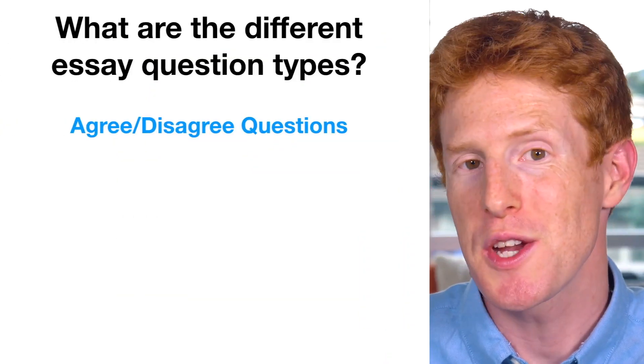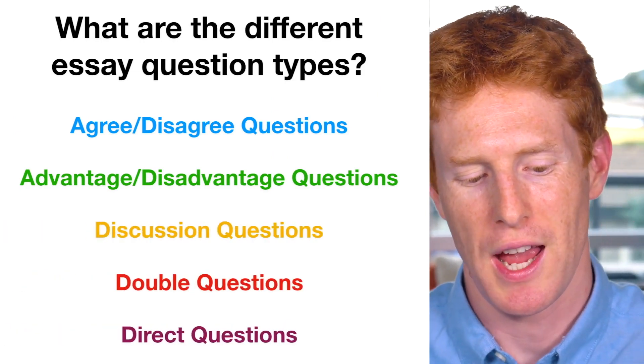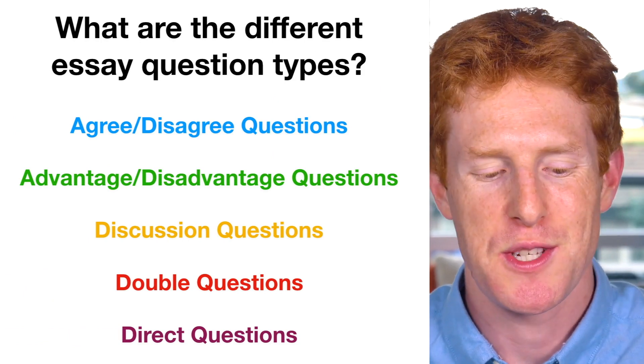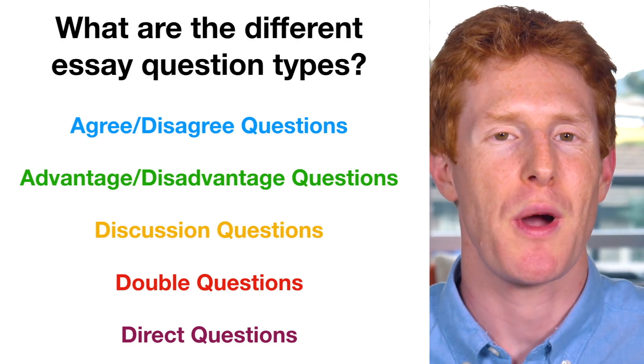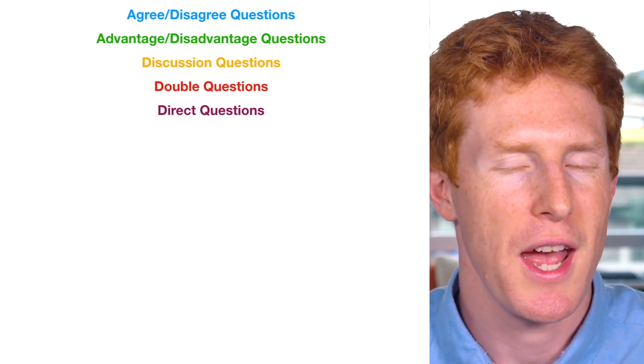Hey there, welcome. In today's lesson we're going to be focusing on the different question types that you can be asked in the IELTS writing test. In task two of IELTS you have to write an essay, and regardless of whether you're doing the academic or general IELTS test, there are certain question types that appear again and again. Those question types are agree-disagree questions, advantage-disadvantage questions, discussion questions, double questions, and direct questions.